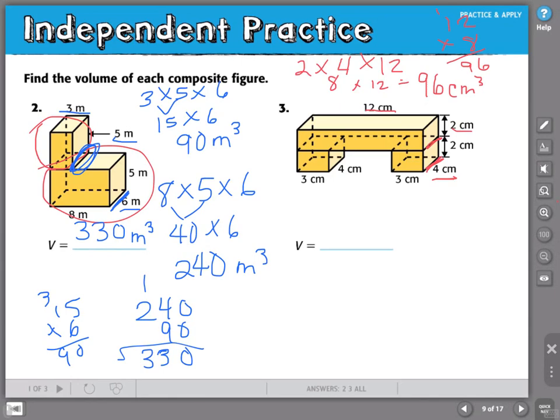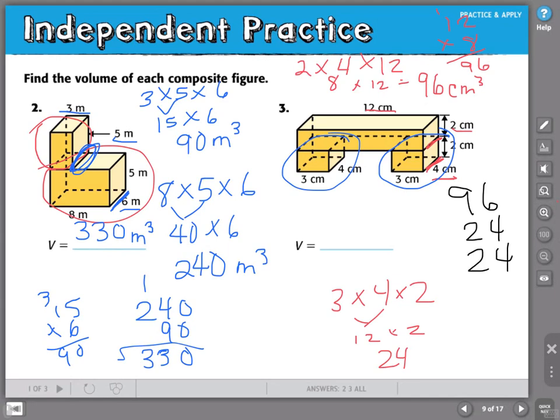Let's check out this bottom one here. We've got 3 times 4 times 2. Well, that's 12. 12 times 2 is 24. But you'll notice here I've got 24 cubic meters here and 24 cubic centimeters here. So I'm going to have to add 96 plus 24 plus 24 to find the volume of the entire figure. 6 plus 4 plus 4 is 14. 1 plus 9 is 10, plus 2 plus 2 is also 14. So I have 144 cubic centimeters.